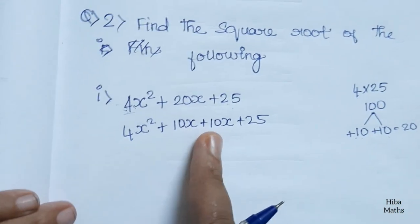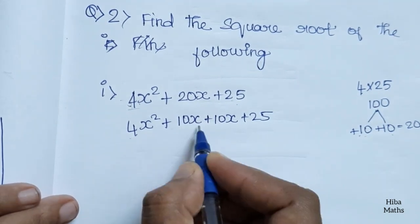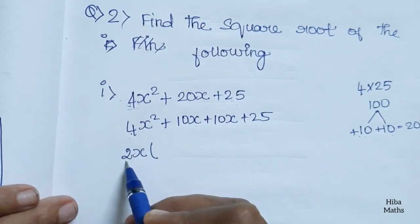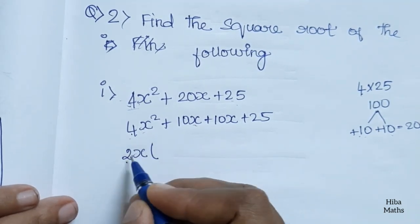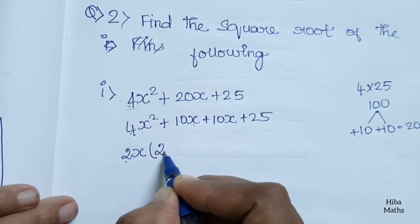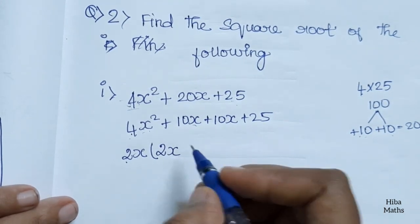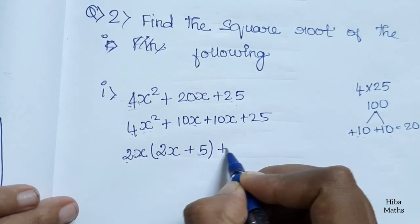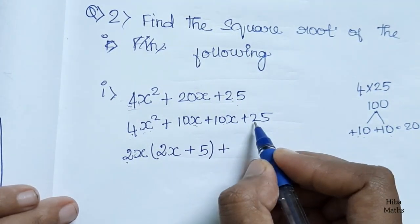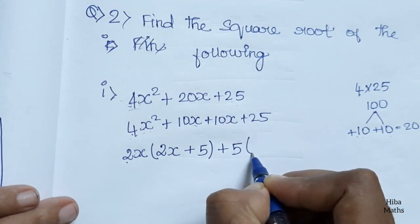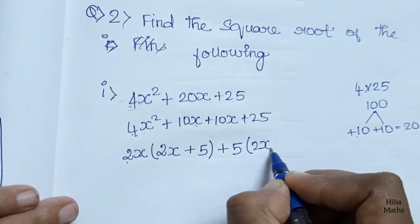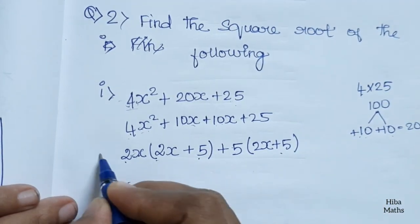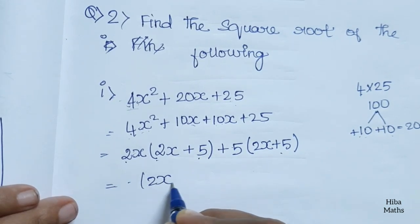In the first two terms, 2x is common. In the last two terms, 5 is common. Taking 2x common gives 2x(2x+5), and taking 5 common gives 5(2x+5). So the answer is (2x+5)(2x+5).